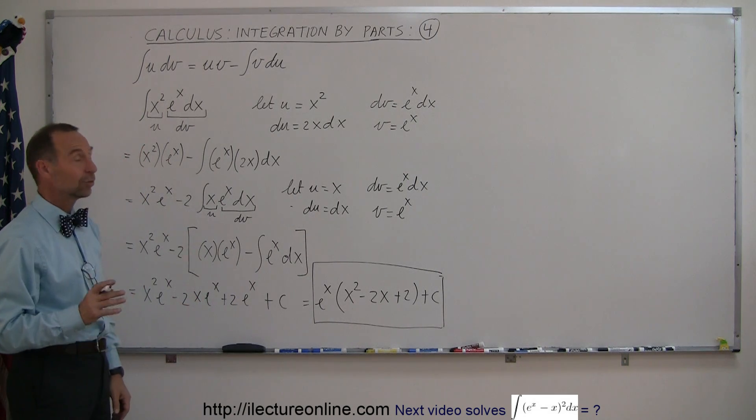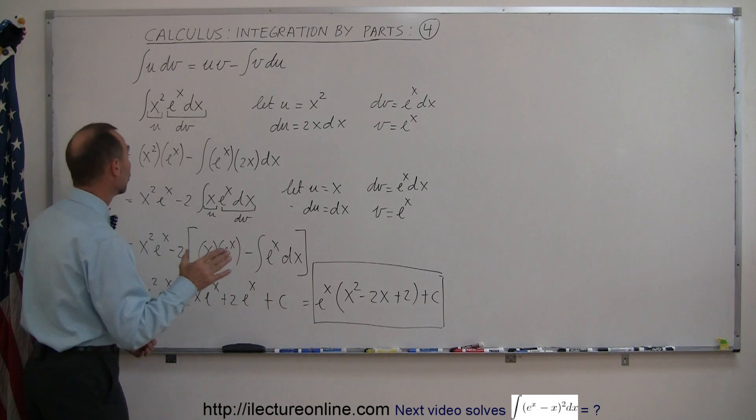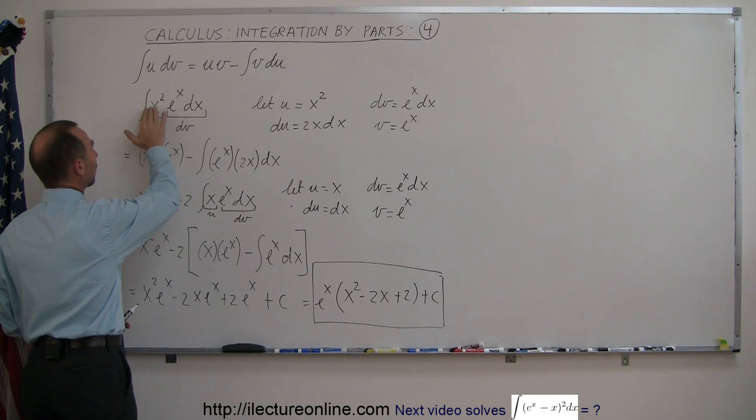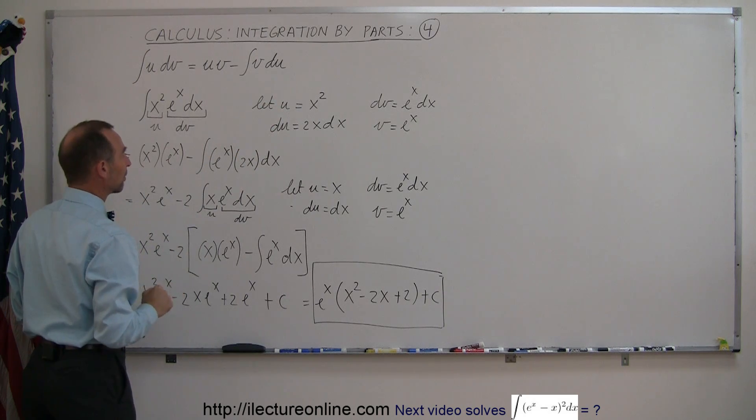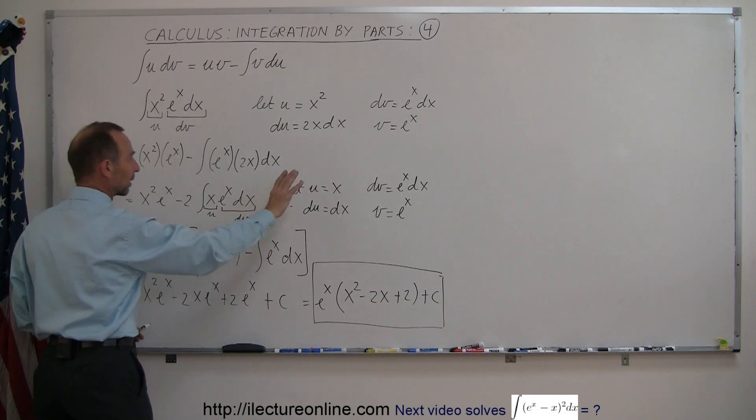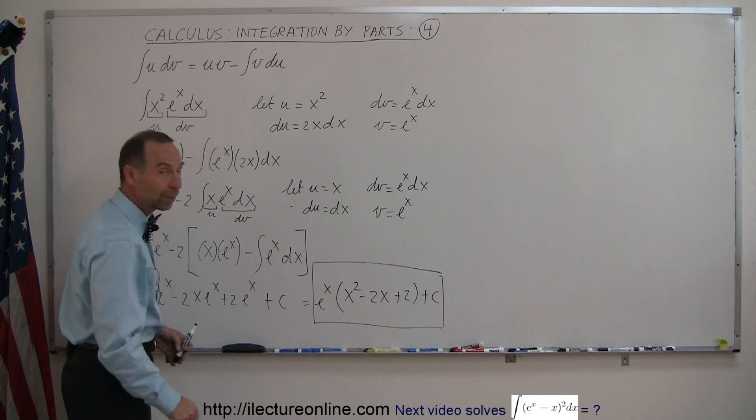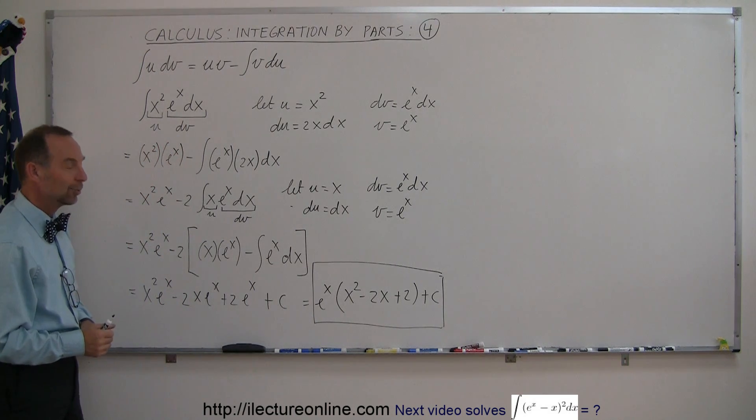Now, notice we have to do this twice. And again, notice the method. We want to get rid of the x squared somehow. We got rid of the first x using the first application of integration by parts. Then we got rid of the second x by doing it a second time. The x was gone. We can then integrate e to the x. And that's how you do that.